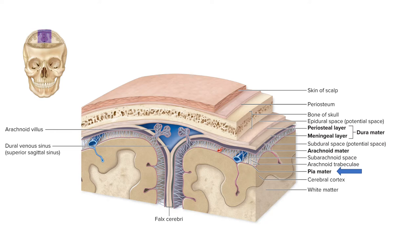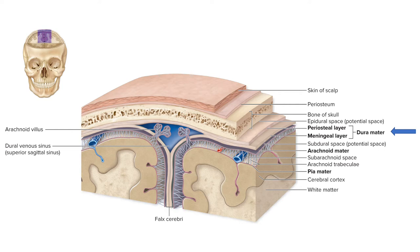Here we can see all three layers put together, starting with the innermost layer, the pia mater, directly on the surface of the brain. Above that, the arachnoid mater, and then the dura mater — which is actually two separate layers. Generally they're so close together it looks like one, but they do separate to give rise to the dural venous sinus, that bluish area where you can see the arachnoid villus projecting into that dural space. We will talk about that very shortly.